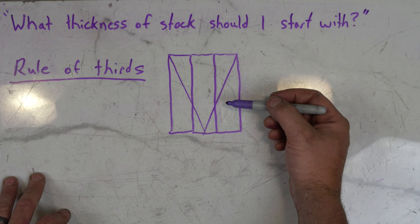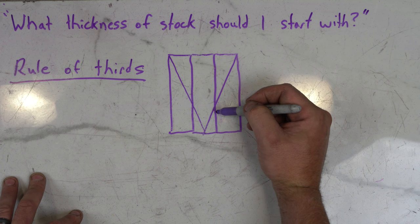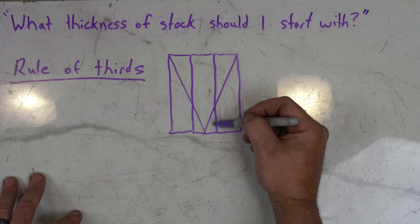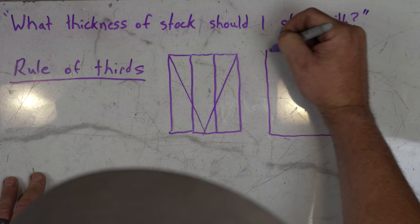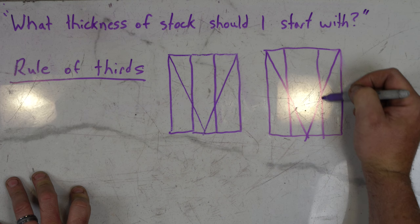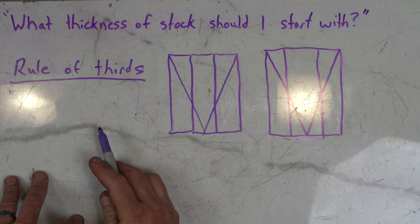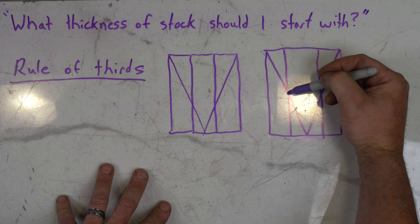Now I might change this a little bit if I wanted, if say the Damascus was in the core. If the core was Damascus and I wanted to show more of the core, I might do something a little different, make the core thicker, so that when I do this, I'm going to have more of this exposed. So it really depends, but generally I like to use the rule of thirds. So that's number one. You need to figure out from your end billet how much you want exposed and where you want the core.